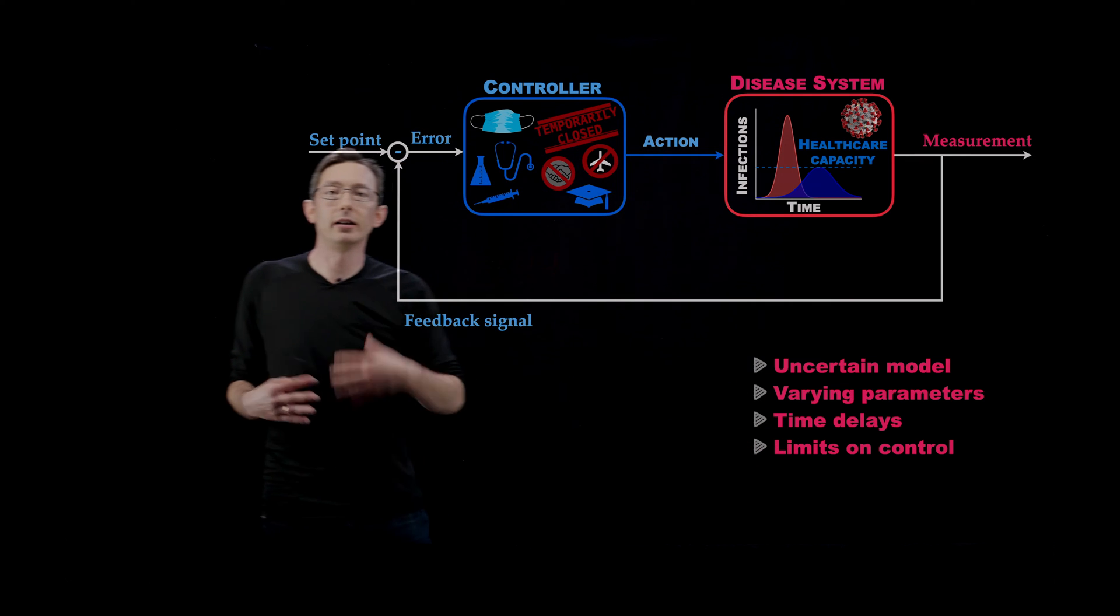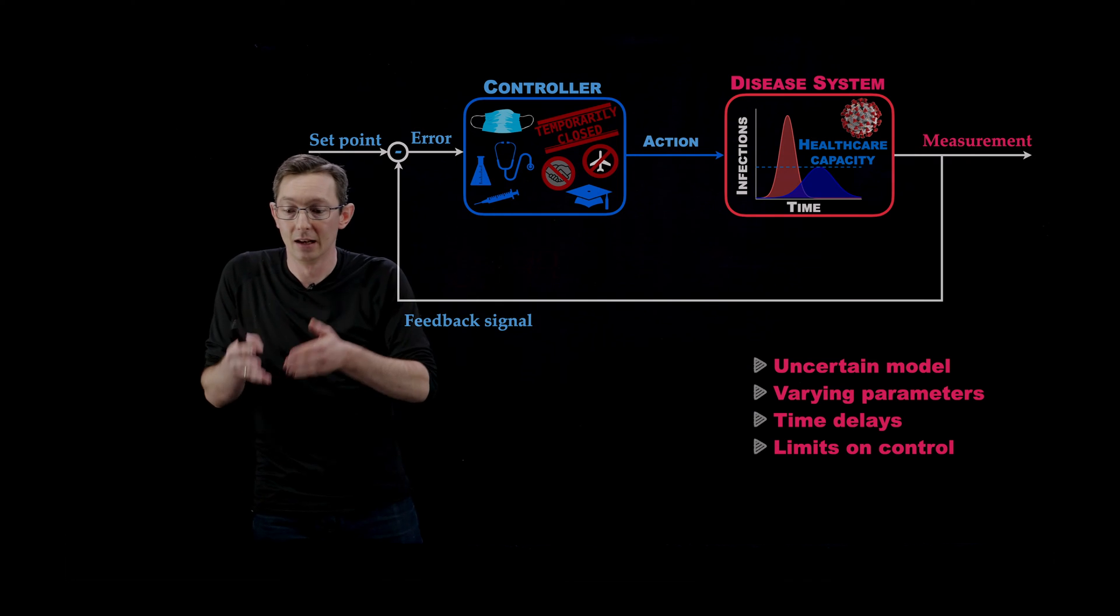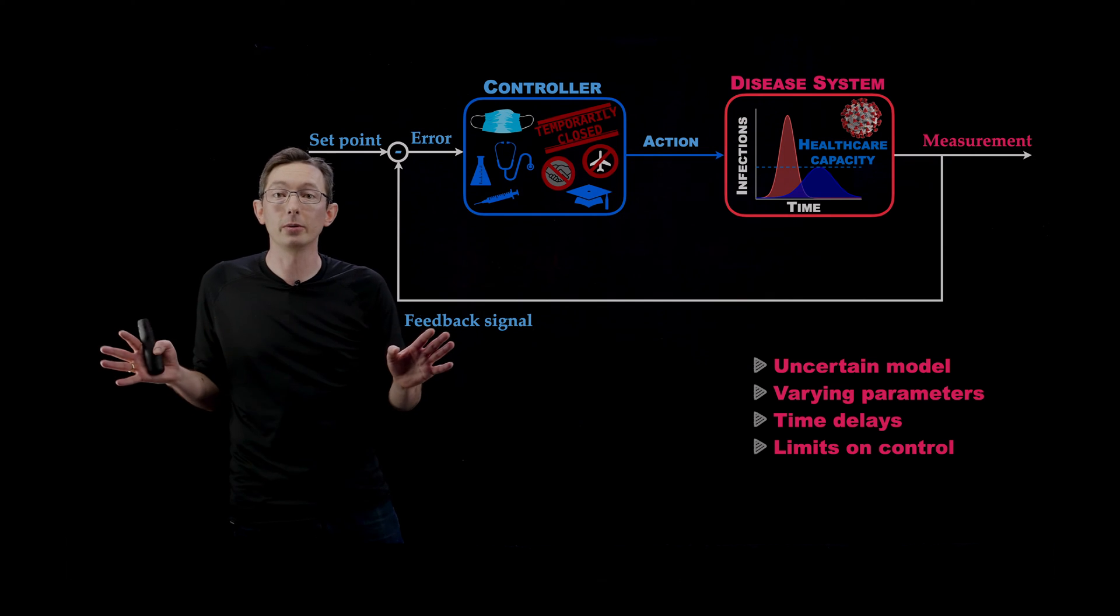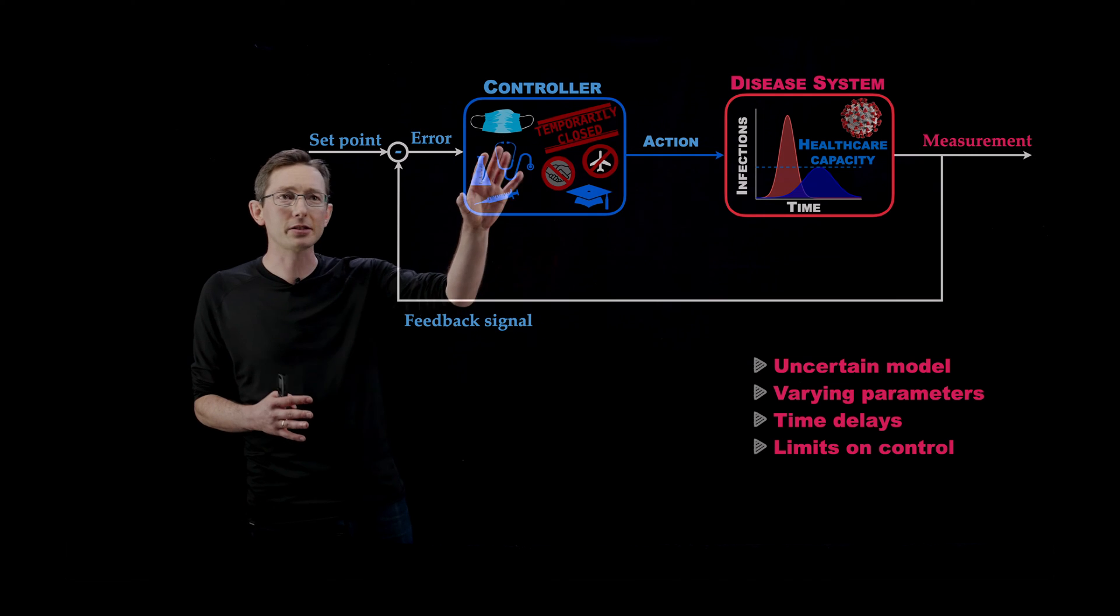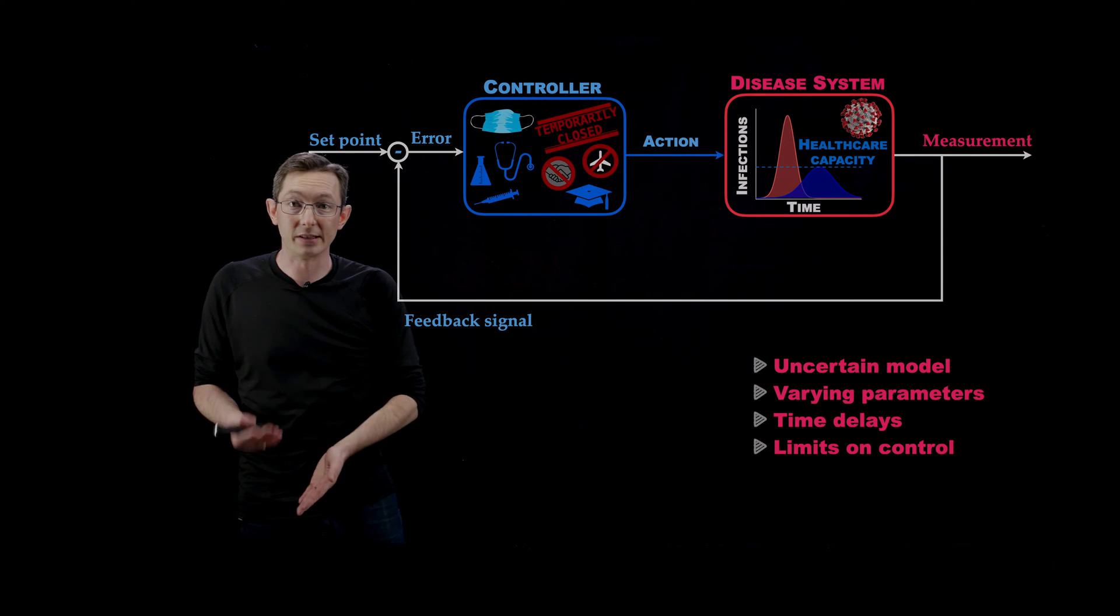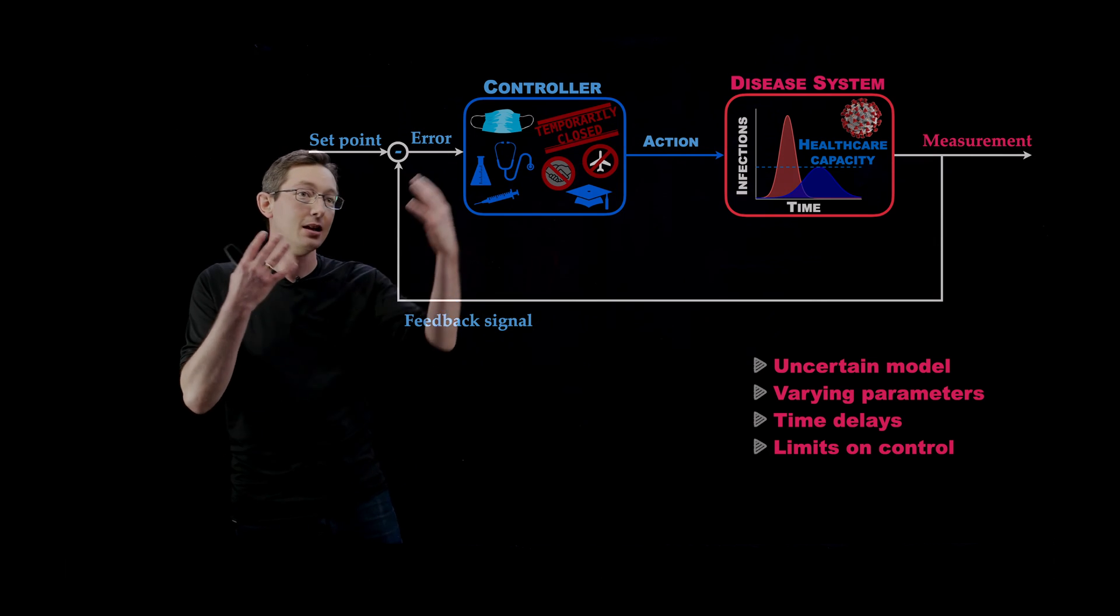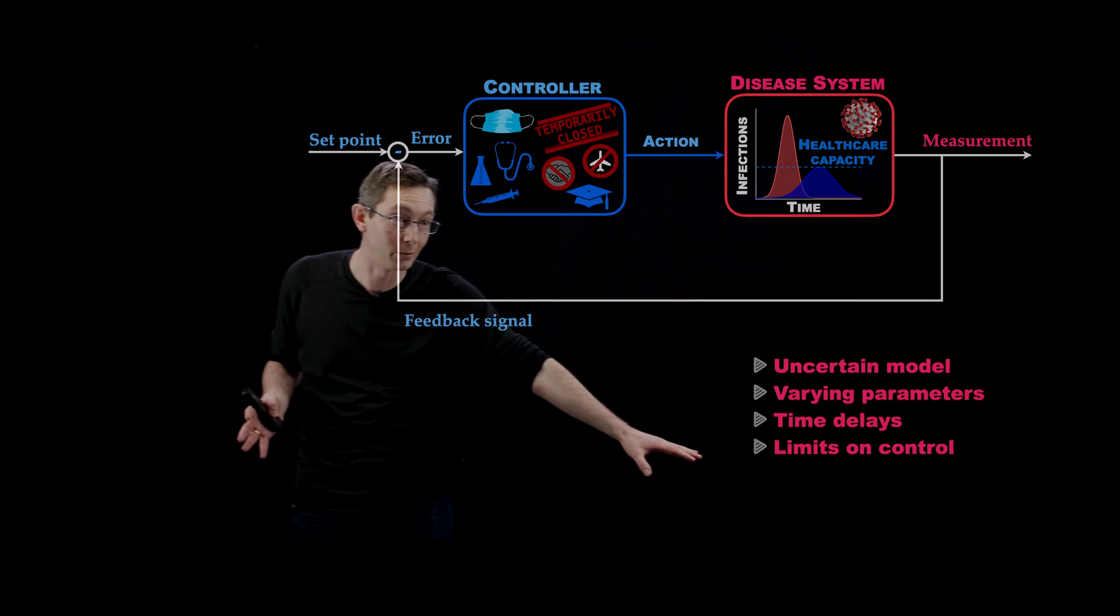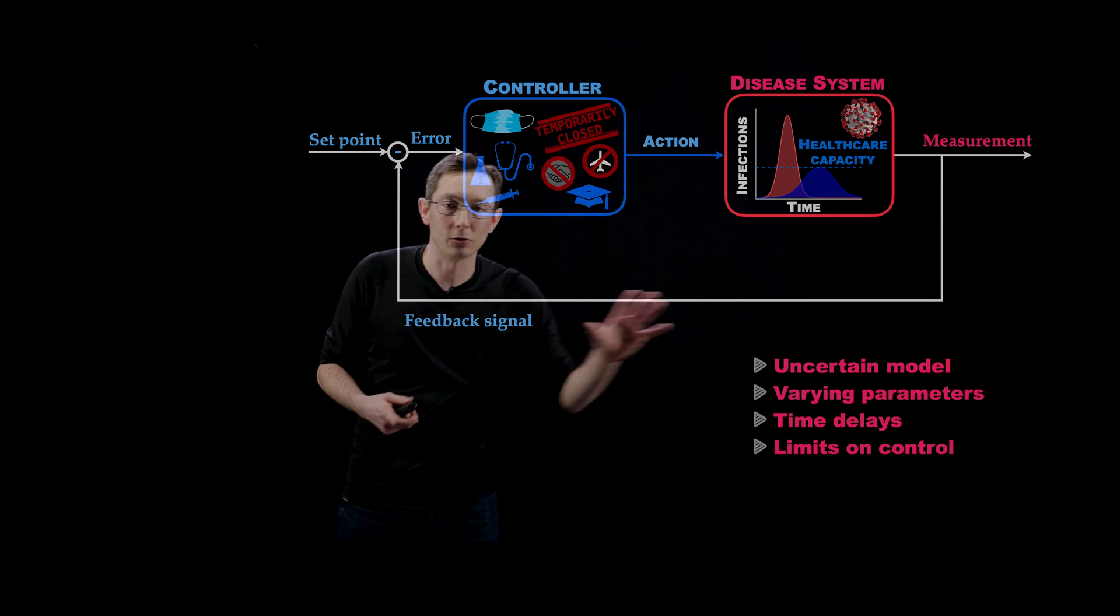We also have fundamental limits on what kinds of control actions we can take. We only can do so much. We can't micromanage every individual person's daily life, and nor do we want to. We can't tell people exactly what they can and can't do. Also we don't want to shut down essential services. You can't shut down the food supply chain. We have to have firefighters and police and medical workers. We have to have that basic infrastructure. So there's limits on what we can do with control, and that's all wrapped up into this control design.